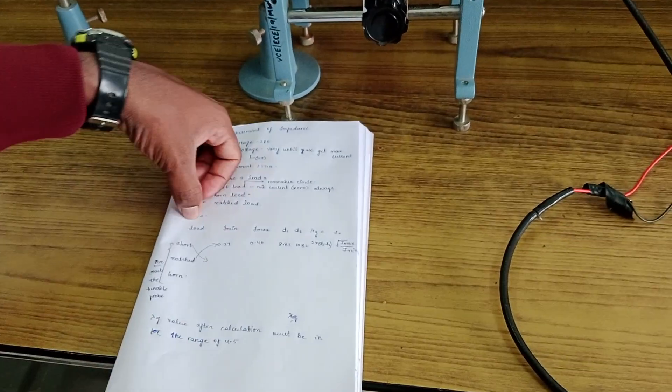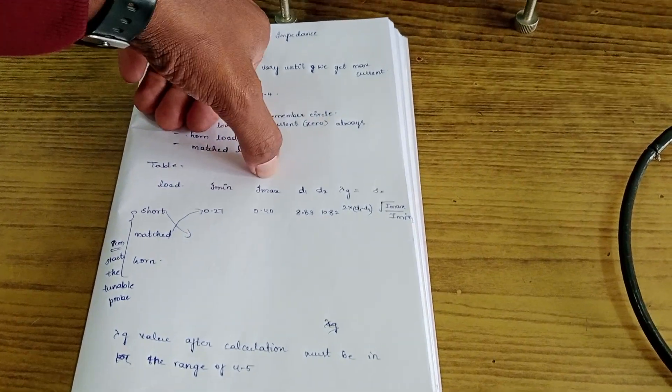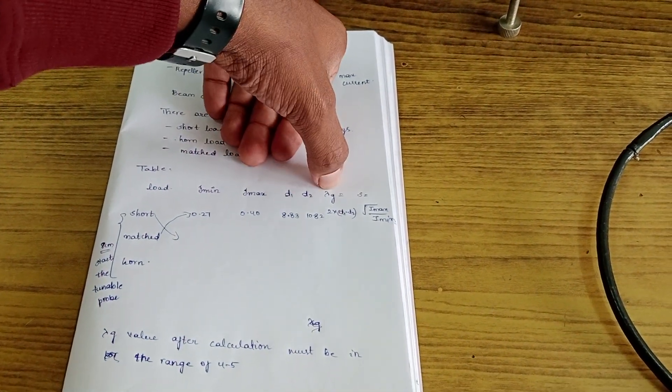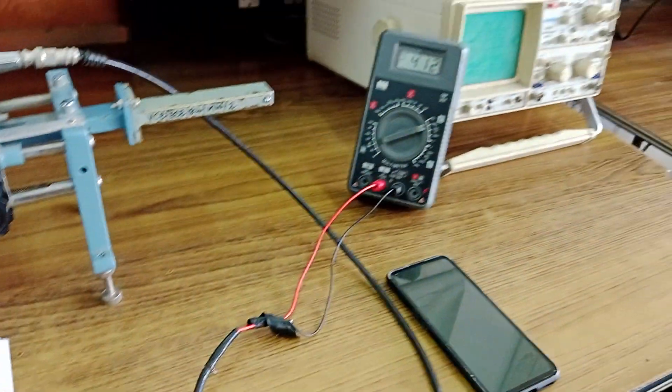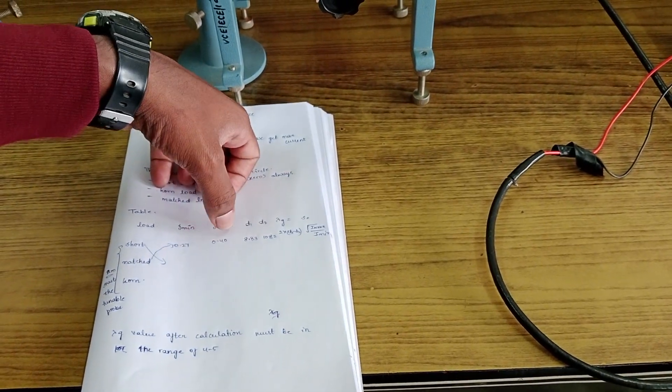So you have to maintain a table like this: Type of load, Minimum current, Maximum current, D1, D2, Lambda G, and S. The minimum current you have to note down what is the minimum current that you got in the overall measurement. Maximum current is the maximum current that you got in the overall measurement.